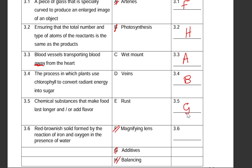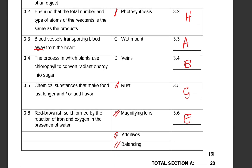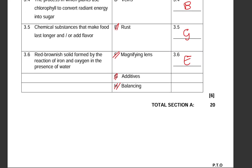3.6: red brownish solid formed by the reaction of iron and oxygen in the presence of water. Definitely E. That was easy peasy. Total for section A, 20 marks.